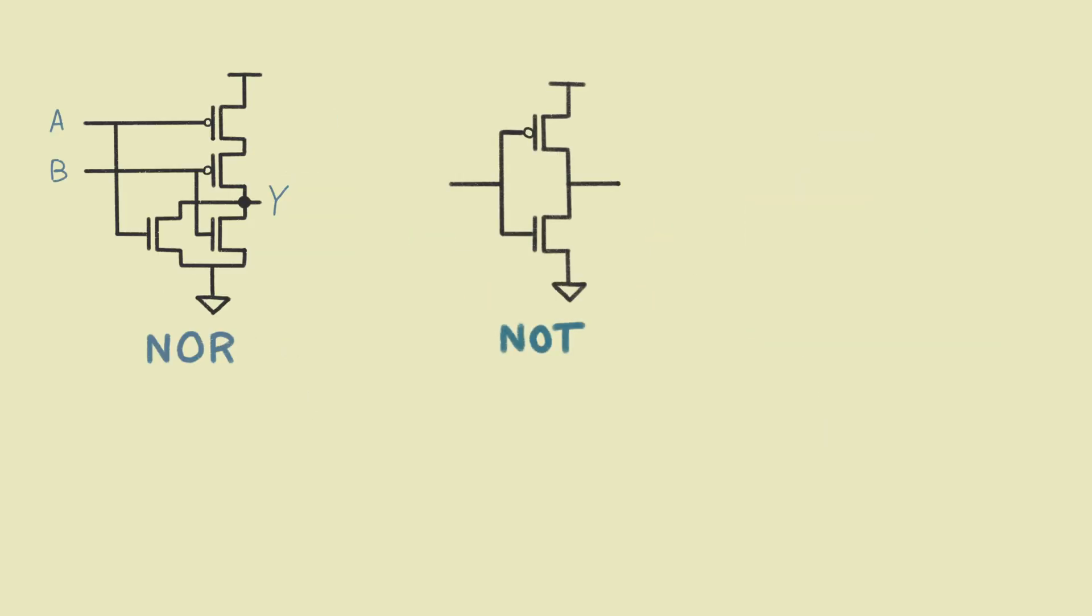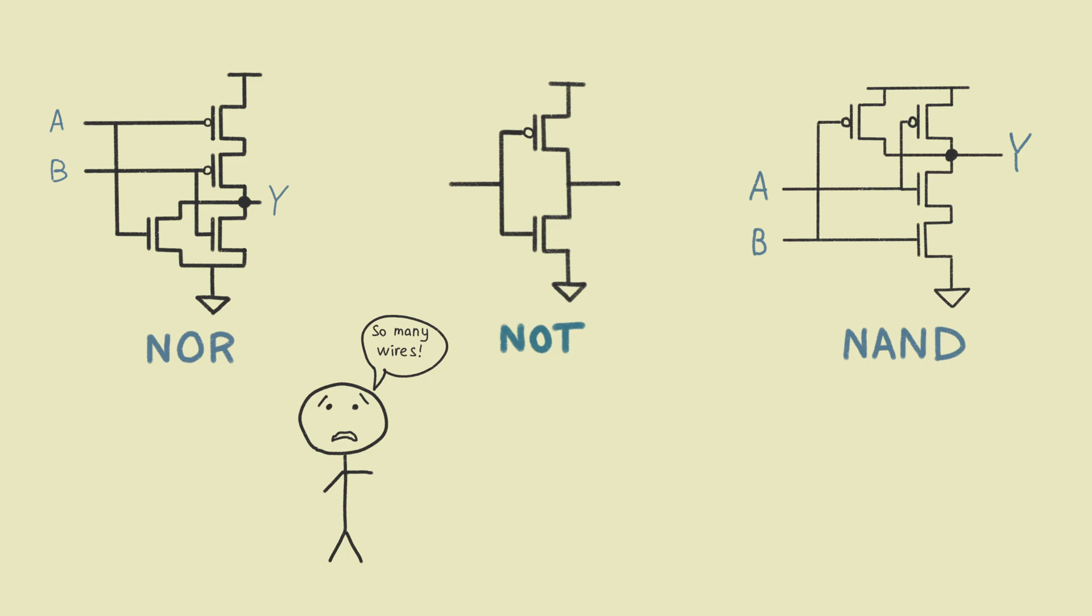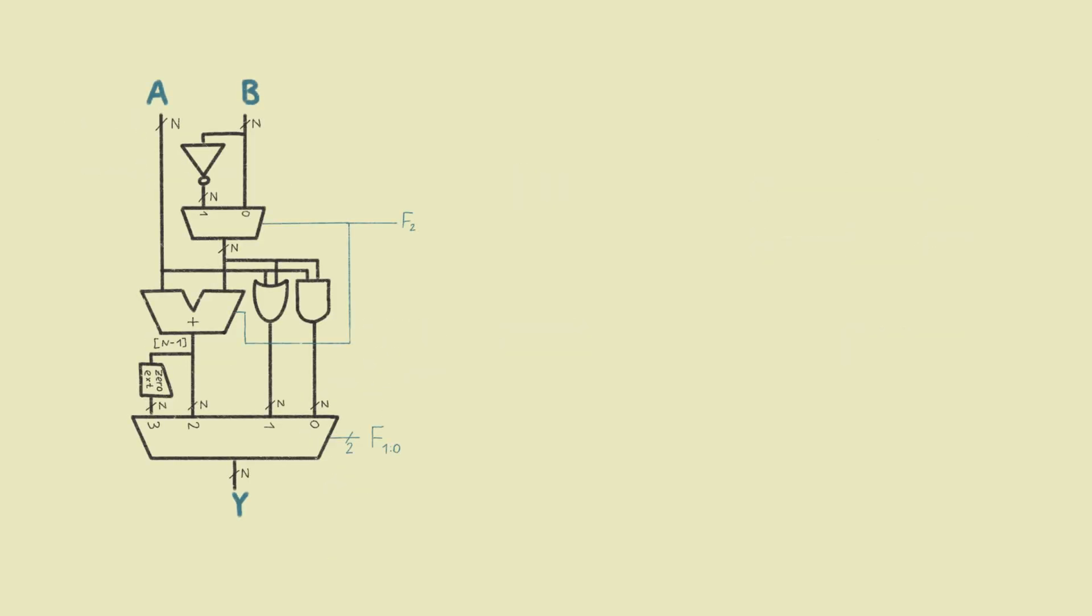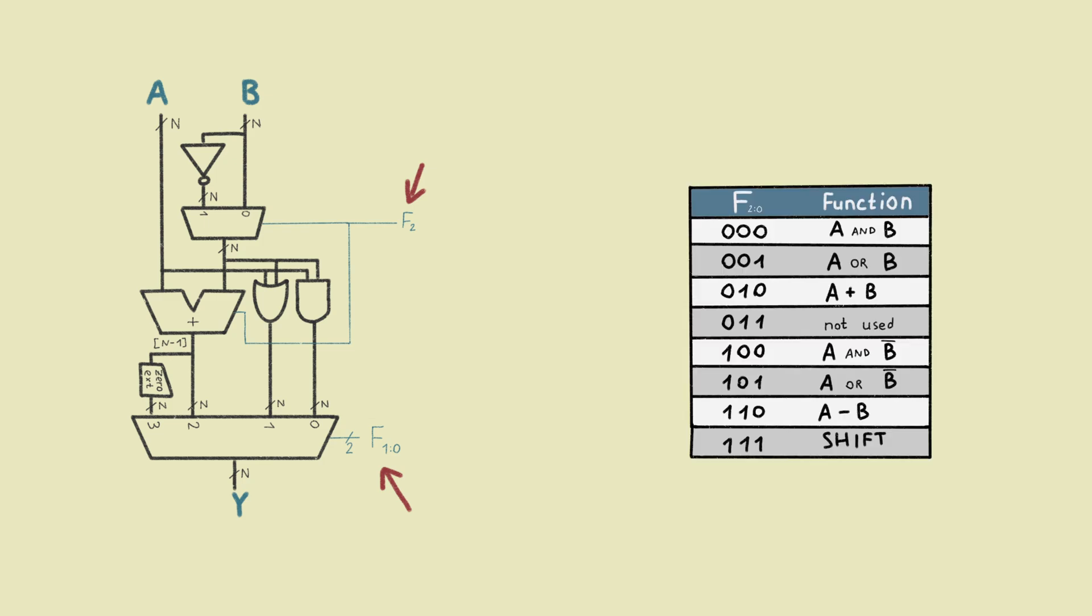Using only those two transistor types, we can build any boolean function we want. And this is notation for such logic gates. This way we can build the arithmetic's unit. This way we are building a foundation for instruction decoding.